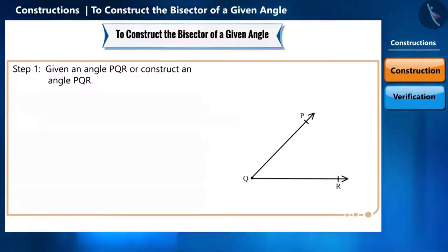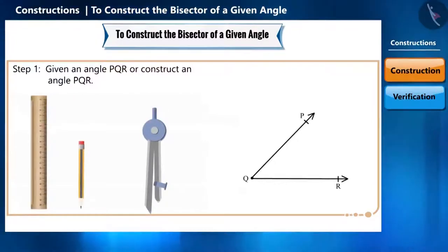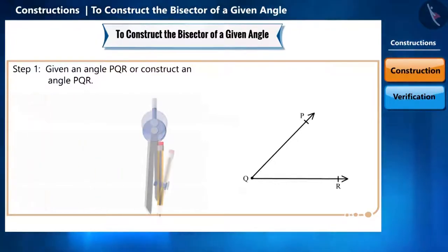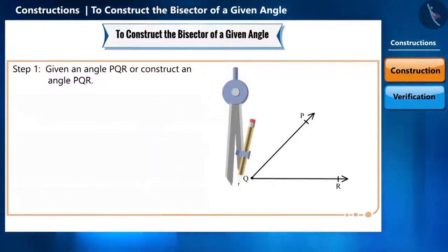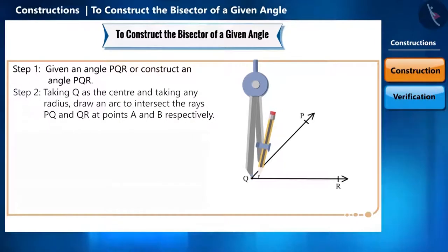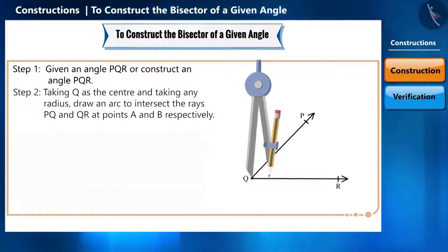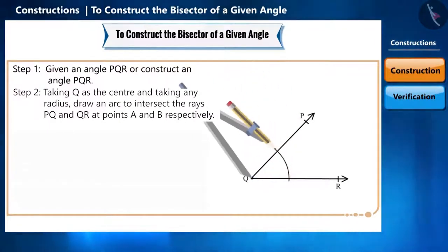First, let us check what all we will need. We will need a scale, pencil and a compass. Now, we will fix the pencil in the compass in this way. Place the pointed end of the compass at the vertex Q. Taking Q as the centre and taking any radius, draw an arc to intersect the rays PQ and QR at points A and B respectively.